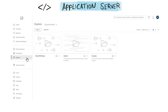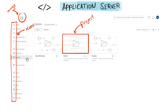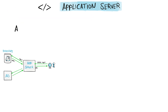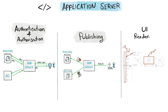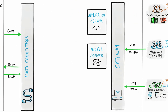One more task for the Application Server is to render the server interface — all those elements you find in Tableau Server like icons, images, projects, and menus. So the Application Server is responsible for authentication and authorization, the publish process, and rendering the server UI. But one process the Application Server will never handle is the visualization process.